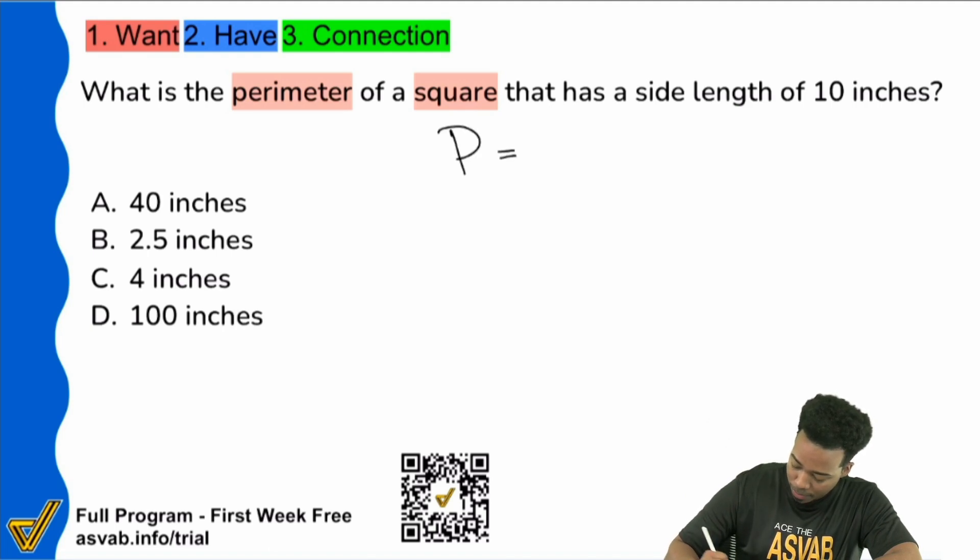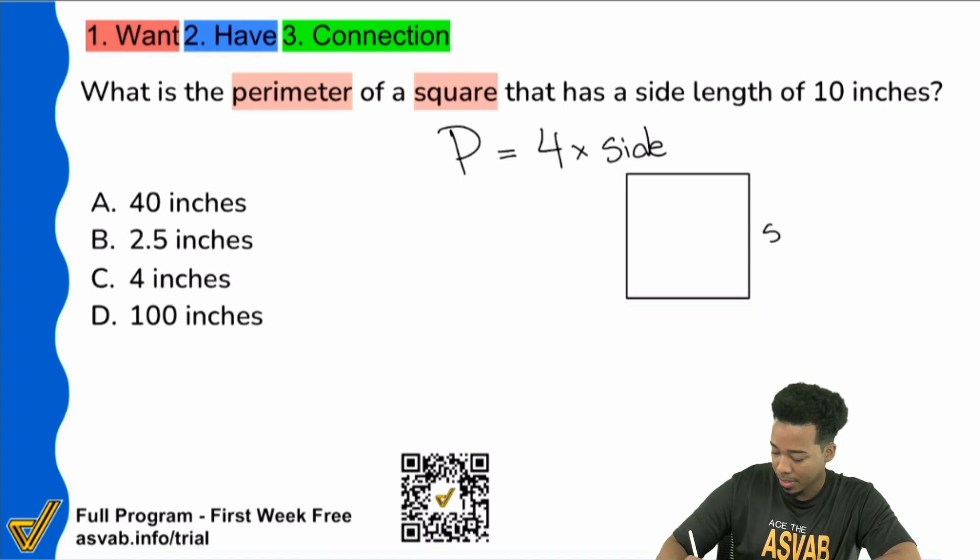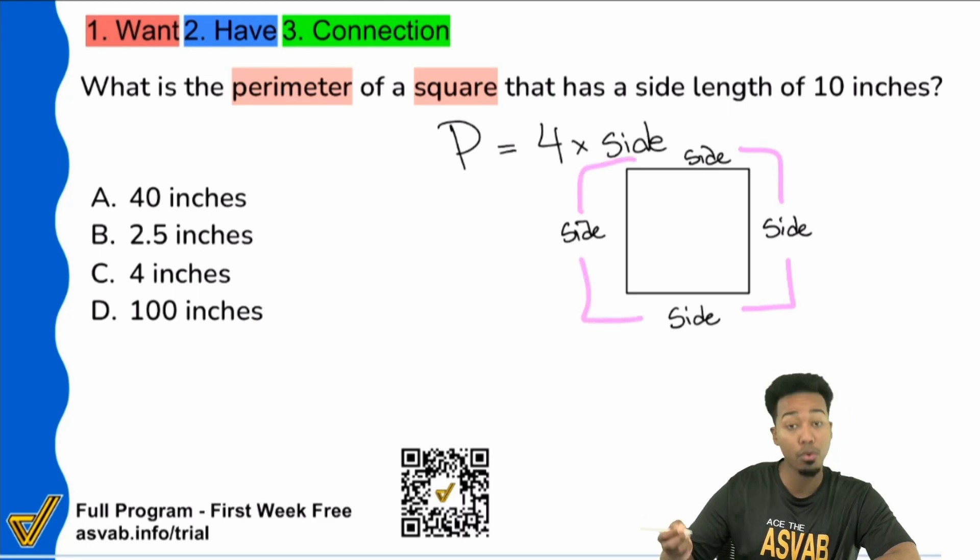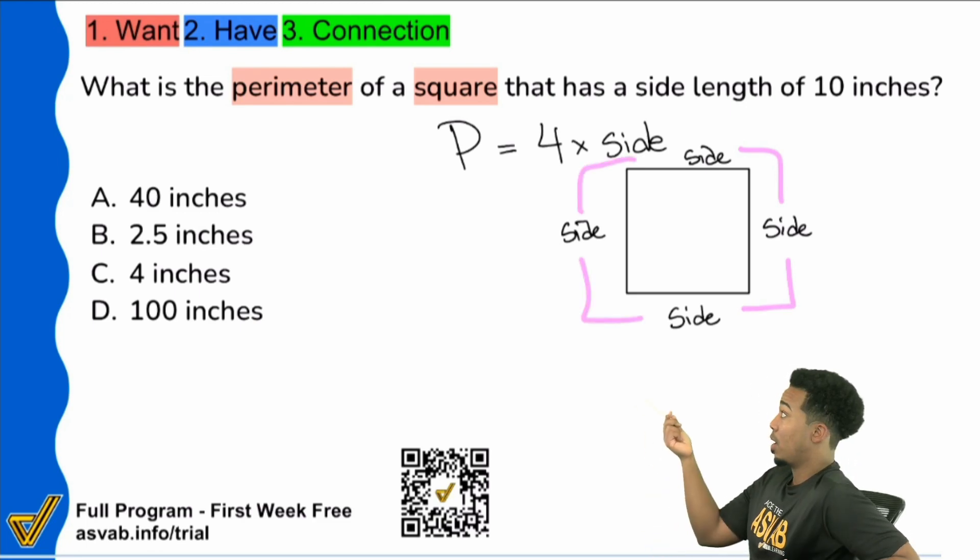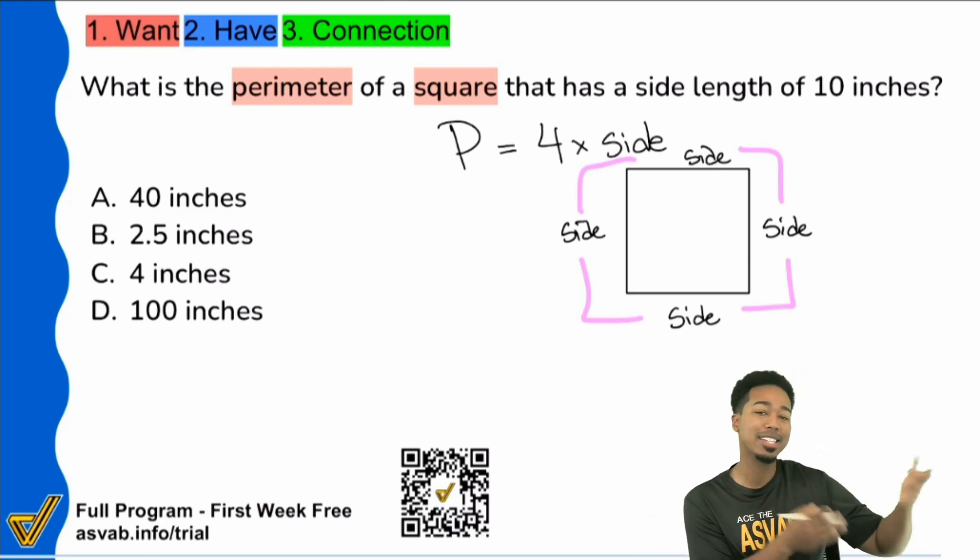So perimeter of a square equals four times the side. And if you don't believe me, just take a look at this perfectly drawn square from me. Boom. Look at that square. All the sides are the same. So that's why since you have four sides that are the same, the perimeter is going to be all four sides added up, or just go ahead and multiply the side by four. Same thing. Multiplying by four means adding it by itself four times.